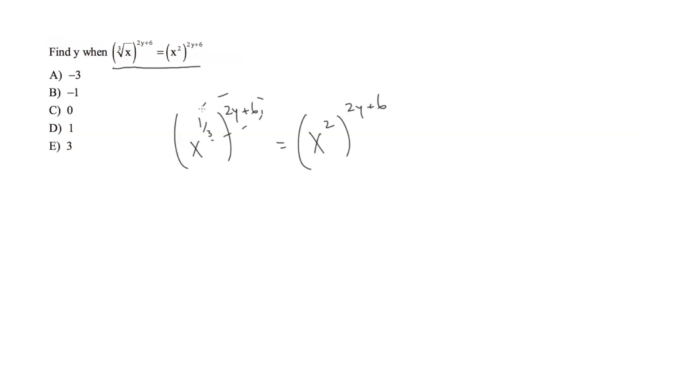We have x to the 1/3rd times 2y plus 6, and that's equal to x to the 2 times 2y plus 6. So on the left side we have x to the 2/3rds y plus 2, and that's equal to x to the 4y plus 12.